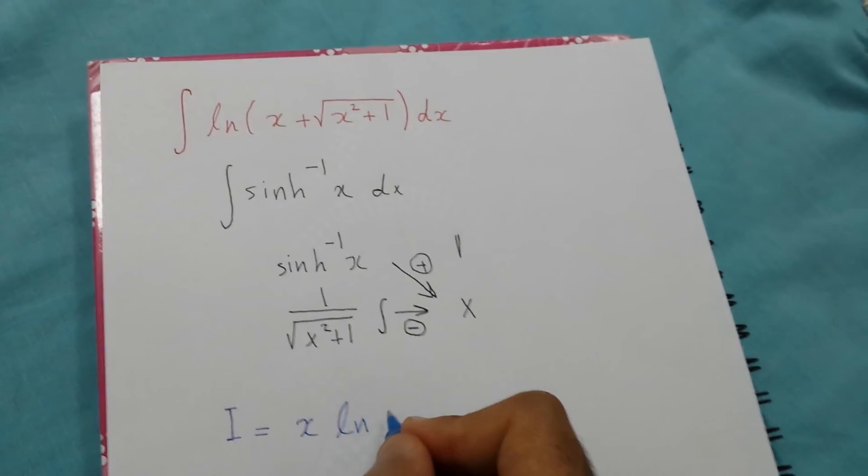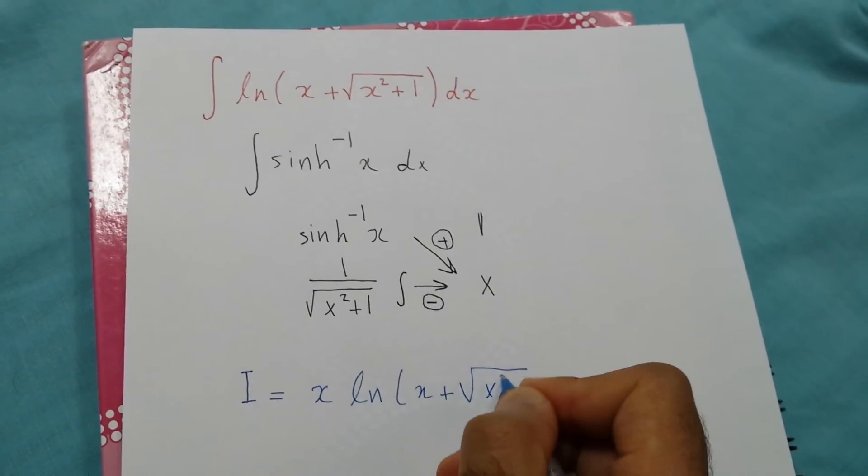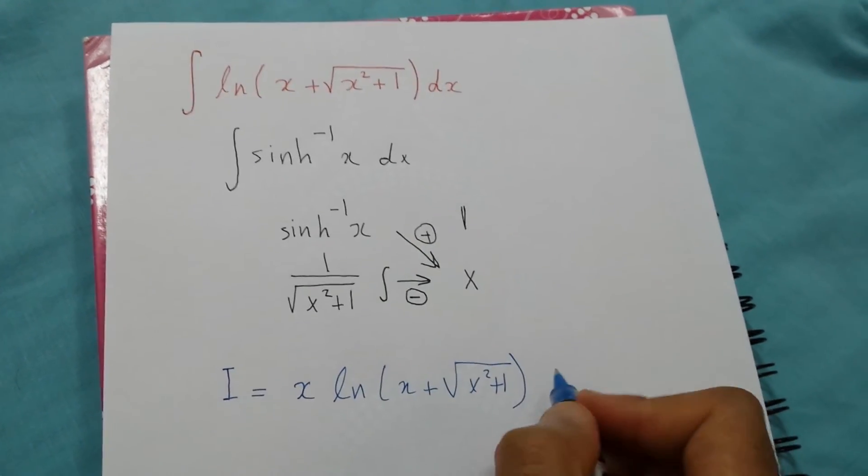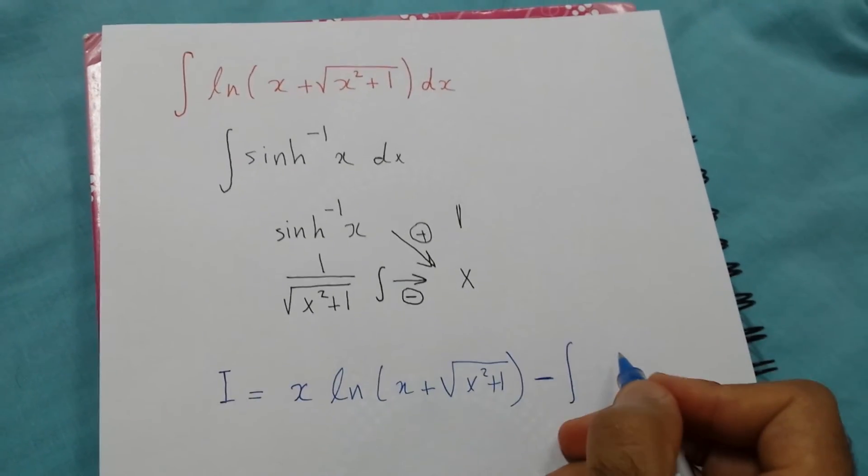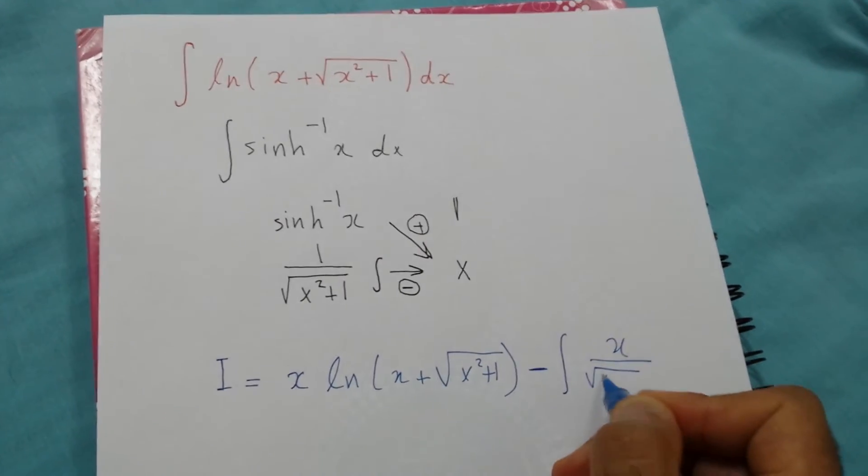That's x·ln(x + √(x²+1)) minus the integral of x/√(x²+1)dx. So what is the integration of x/√(x²+1)?